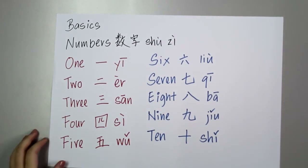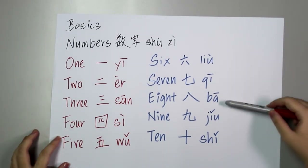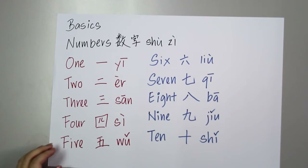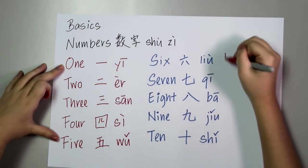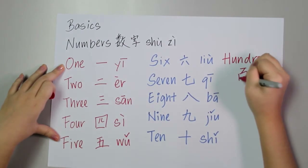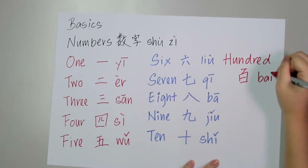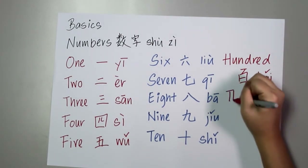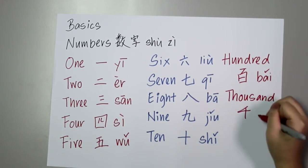Now let's try once from six to ten: liu, qi, ba, jiu, shi. So we have done with one to ten. How about hundred? Hundred is bai. And for thousand, it is qian.